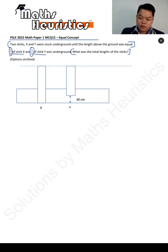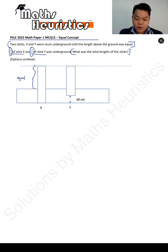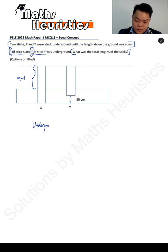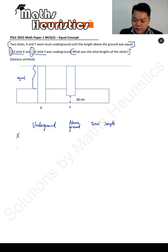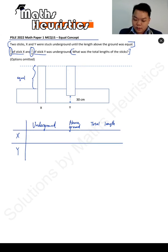So let's think about it this way. The two lengths here are equal to one another. If we compare what was underground and what was above ground, and the total length of the sticks between stick X and stick Y — using the unit transfer method, we can tabulate and organize the information like so.